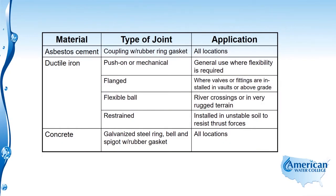You're likely to see several questions regarding pipe joints on your exam, so I want to cover it here by way of introduction and then we'll cover it again later in this lesson. Let's look at the different types of pipe joints used for different materials. First, we have asbestos cement pipe. It is not installed anymore because of the asbestos, yet it still exists in many systems around the country. The type of joint used is a coupling with a rubber ring gasket, and that's used in all locations.